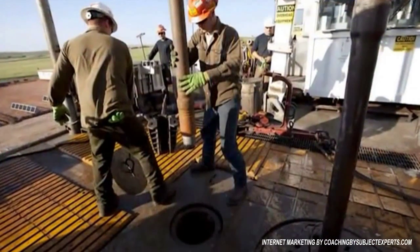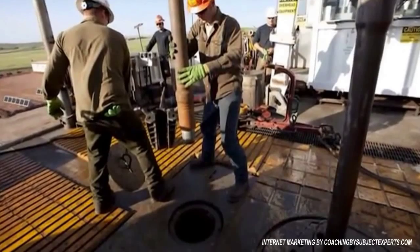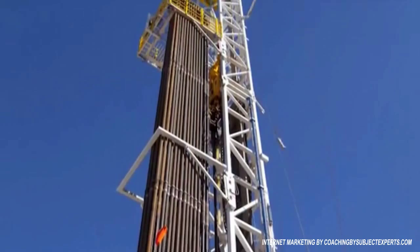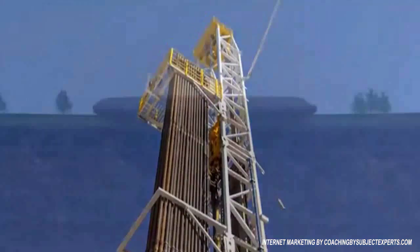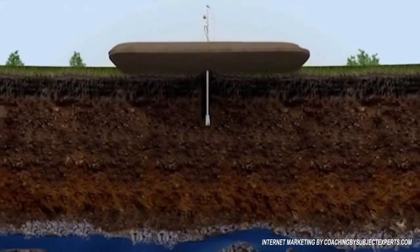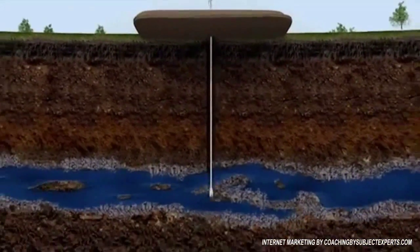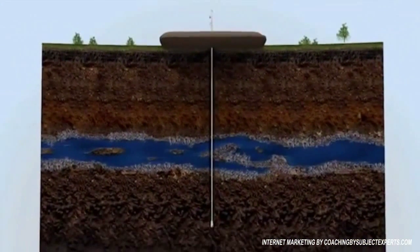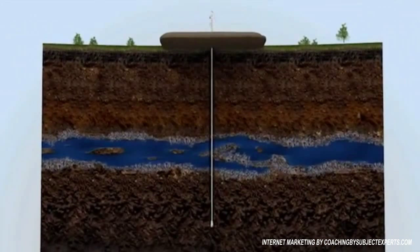During the past 60 years, the oil and gas industry has conducted fracture stimulations in over one million wells worldwide. The initial steps are the same as for any conventional well. A hole is drilled straight down using freshwater-based fluids, which cools the drill bit, carries the rock cuttings back to the surface, and stabilizes the wall of the wellbore.